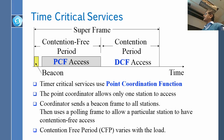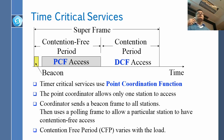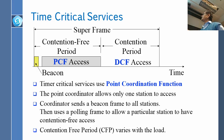The beacon announces how long the contention-free period will be, so stations will not try to transmit during that period at all. Within the contention-free period there is a small polling period during which a station can request PCF access — it probably won't get it in the same period but will get it in the next cycle. If the contention-free period grows too long, the contention period shrinks. The entire super frame length is fixed and is announced in the beacon.